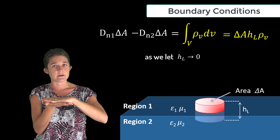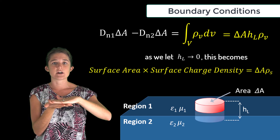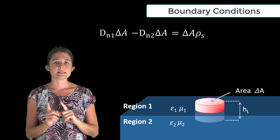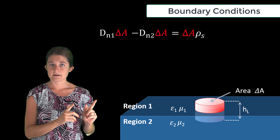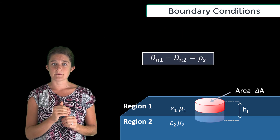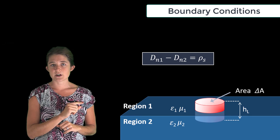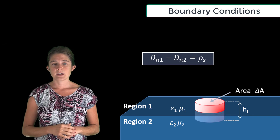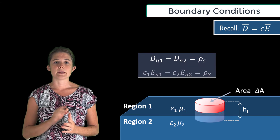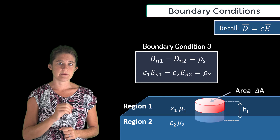On the right-hand side of Gauss's law we have the total charge in the box, and as we let the height go to zero, that becomes the area times the surface charge density on the boundary. The area term delta A cancels, leaving D_n1 minus D_n2 equal to the surface charge density rho_s. Since D equals epsilon E, this may also be written in terms of E. This is the third boundary condition.